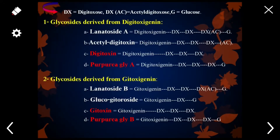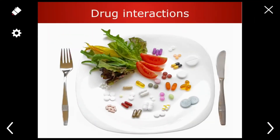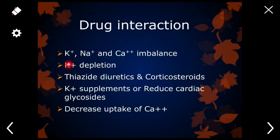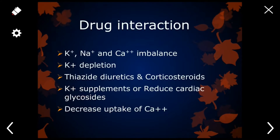We will now discuss drug interactions of digitalis glycosides with other drugs. Glycosides present in digitalis cause depletion of potassium in the blood and increase the concentration of sodium and calcium in the body. Accordingly, we must adjust doses of other drugs taken alongside digitoxin or digitalis. For example, you should decrease thiazide diuretics or corticosteroids, which also cause potassium depletion, or add potassium dietary supplements to the patient's diet, or reduce the dose of cardiac glycosides to compensate for potassium depletion. Also, advise the patient to decrease calcium intake from milk or other food sources.